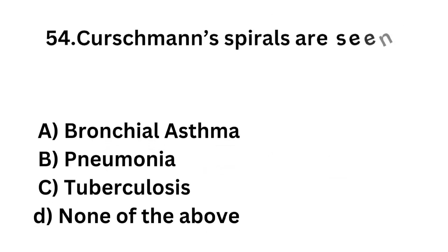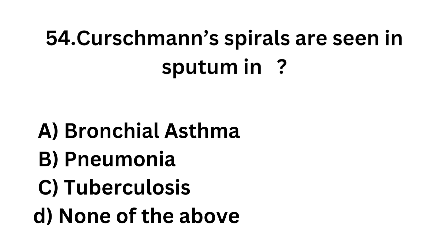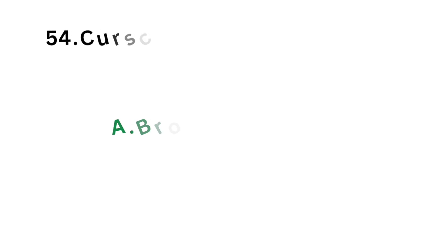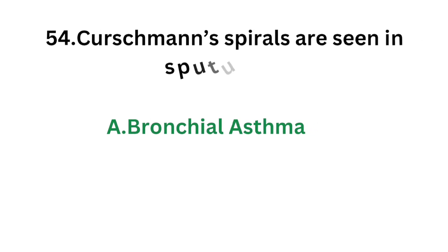Question number 54. Curschmann's spirals are seen in sputum of: Option A - Bronchial asthma; Option B - Pneumonia; Option C - Tuberculosis; Option D - None of the above. The correct answer is Option A, Bronchial asthma. In bronchial asthma, Curschmann's spirals can be seen in sputum.